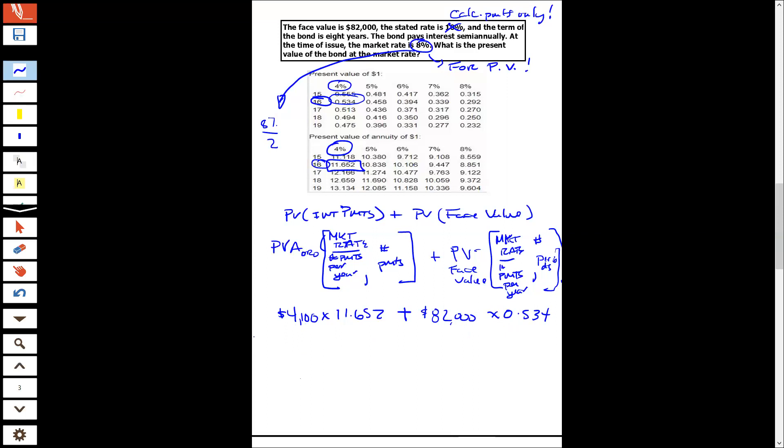So I'm going to do this problem right now. 4100 times 11.652, and feel free to do it with me. 47,773 to the nearest dollar. 47,773. And store that one. 82,000 times 0.534, 43,788. So the present value of the bond equals store to enter recall one plus, 91,567. 91,561. I got 561.